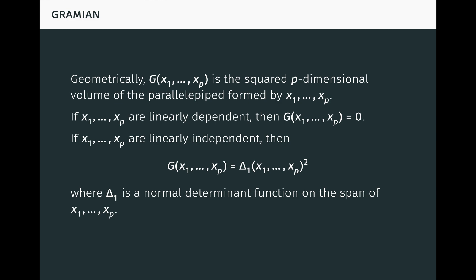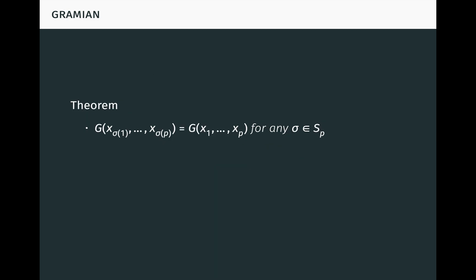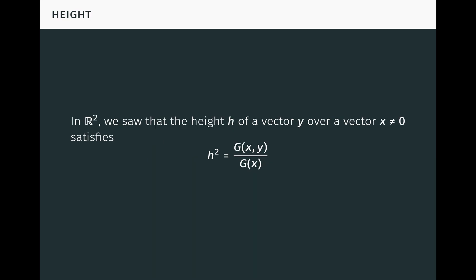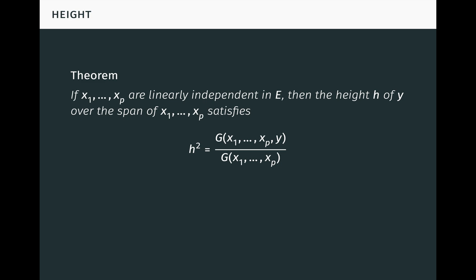Using this geometrical interpretation, we can immediately establish basic properties of the Gramian. For example, g of x_σ(1) to x_σ(p) equals g of x1 to xp for any permutation sigma of the numbers 1 to p — that is, g is unchanged under any rearrangement of its inputs. Also, g of x1 to xp is greater than or equal to zero, and g of x1 to xp equals zero if and only if x1 to xp are linearly dependent. In the plane R², the height h of a vector y over a vector x satisfies h² equals g of x, y over g of x — that is, height squared equals area squared over base squared. More generally, if x1 to xp are linearly independent in E, then the height h of y over the span of x1 to xp satisfies h² equals g of x1 to xp, y over g of x1 to xp.